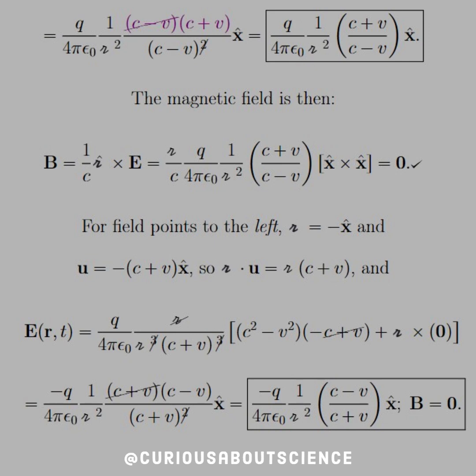And thus, we can prove that the field of this particular setup is Q over 4πε₀, 1 over script R squared, C plus V over C minus V in the x-hat direction.